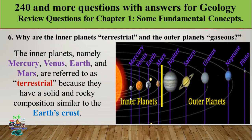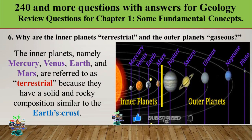Near to the Sun we have Mercury, Venus, Earth, and Mars — these four planets are called inner planets. The outer planets are Jupiter, Saturn, Uranus, Neptune, and Pluto. The inner planets are referred to as terrestrial because they have a solid and rocky composition similar to the Earth's crust.